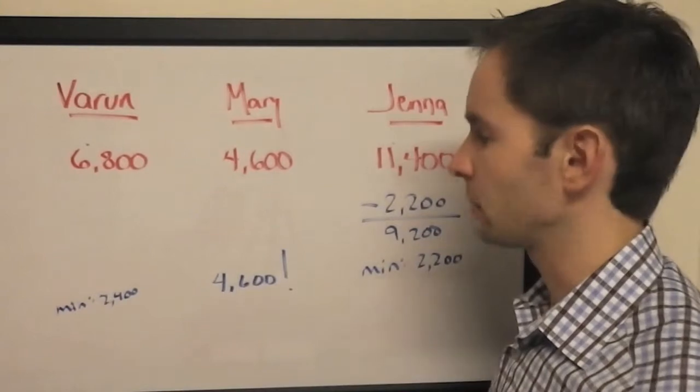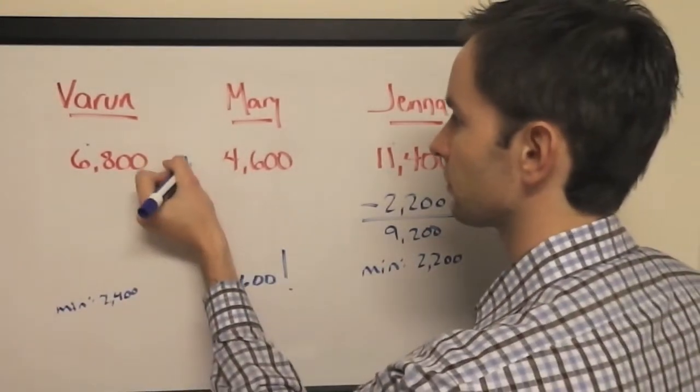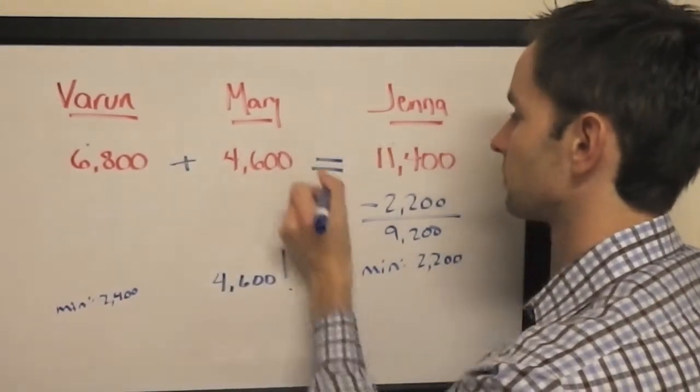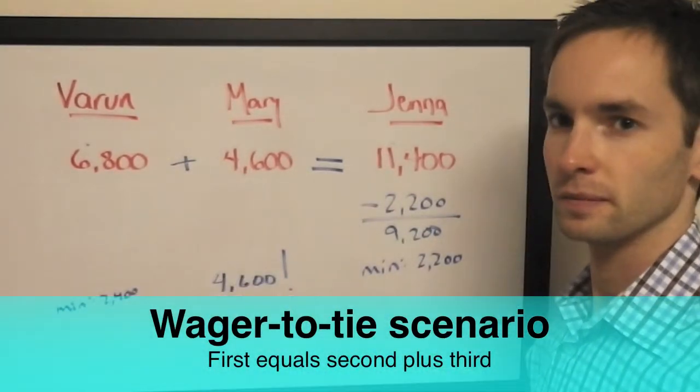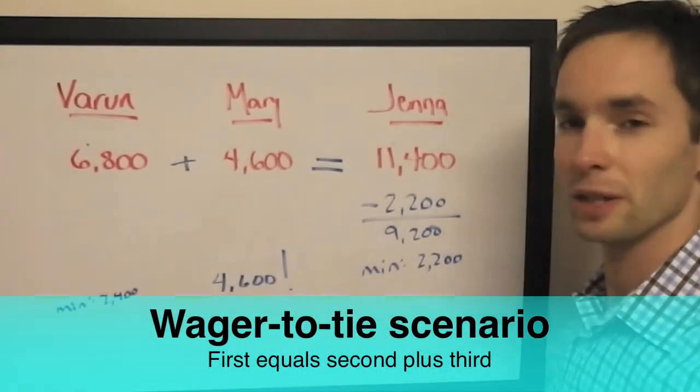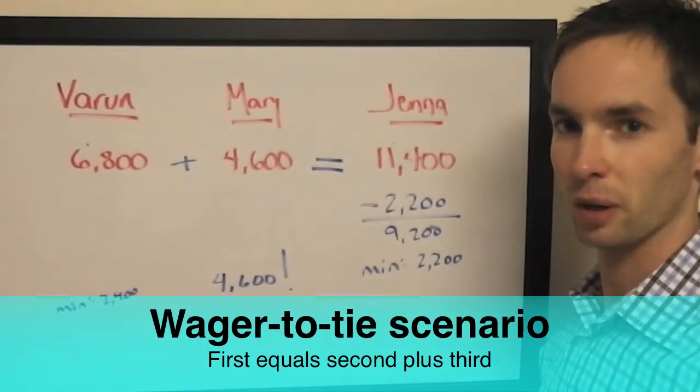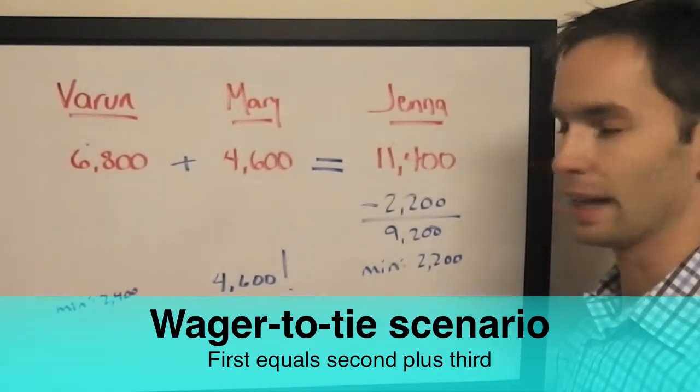We have a wager-to-tie scenario because first equals second plus third. One of those classic situations I told you to memorize in Part 4 of my tutorial. And here it is.